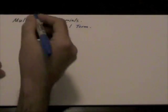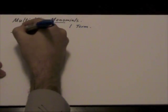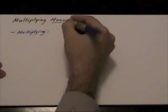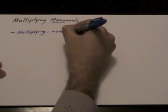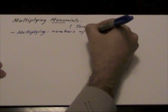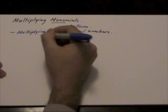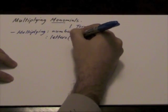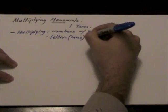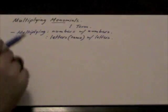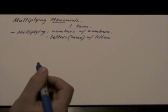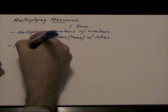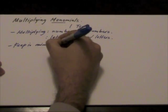When multiplying monomials, the thing to keep in mind is that we are going to be multiplying numbers with numbers, letters with letters, the same letters or variables with each other.